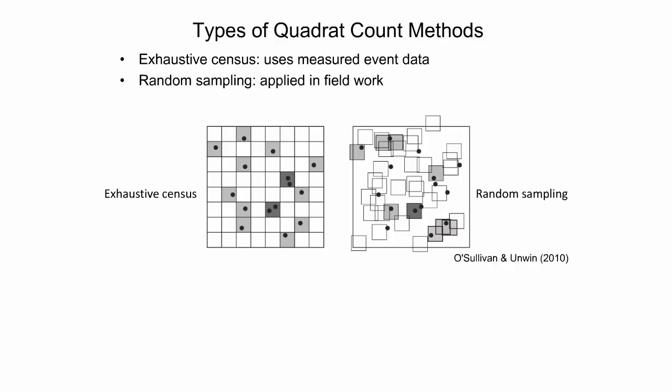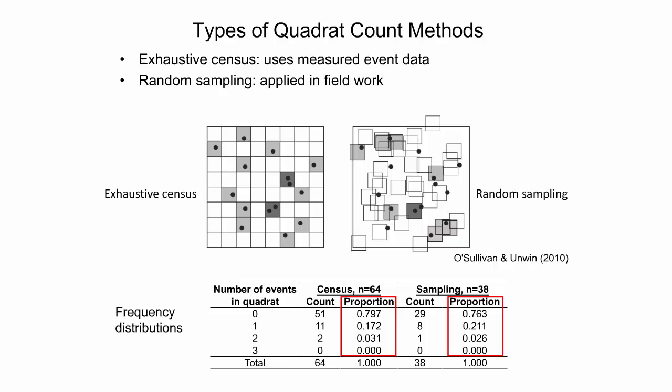Typically, some events will be missed and some will be double counted. Whichever approach is applied, the outcome is a list of quadrat counts recording the number of events in each quadrat. These counts are then compiled into a frequency distribution listing how many quadrats contain zero events, how many contain one event, and so on. As the table shows, the frequency distributions for the exhaustive census and random sampling are similar, leading to comparable results.